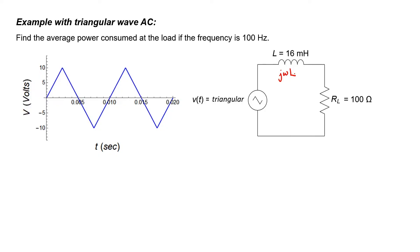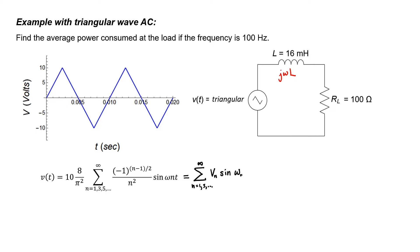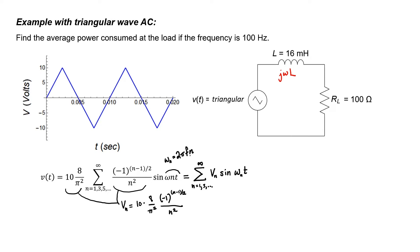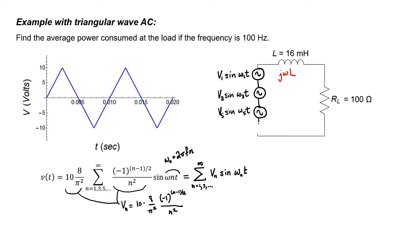I'm not going to derive the Fourier representation of a triangular wave — I'm just going to note it down. This is what the voltage looks like for this particular wave. I'm going to lump some of these constants together and just call the amplitude of each component V sub n. I'm going to define ω sub n as being 2π·n times our operating frequency, which is 100 Hz in this particular problem. This means our original source can be represented as many different sine waves in series with one another, and the impedance of our inductor is different for each source.